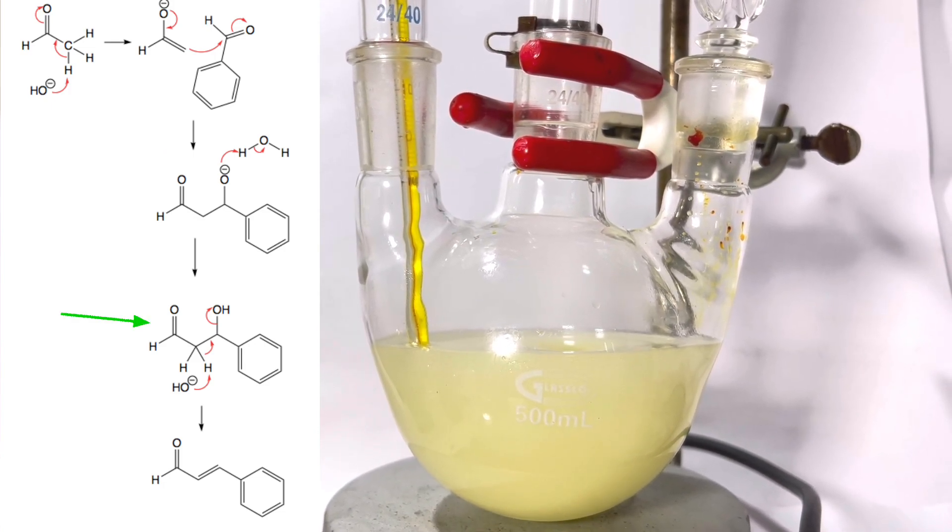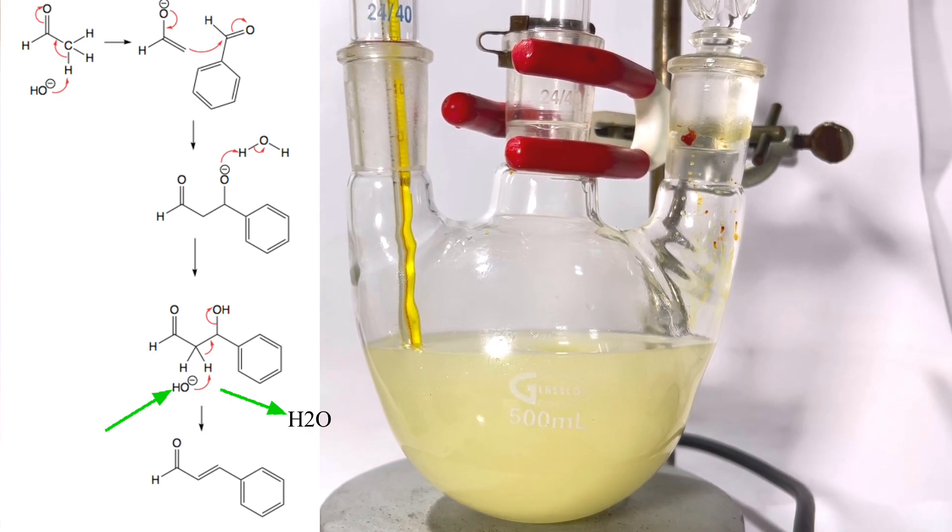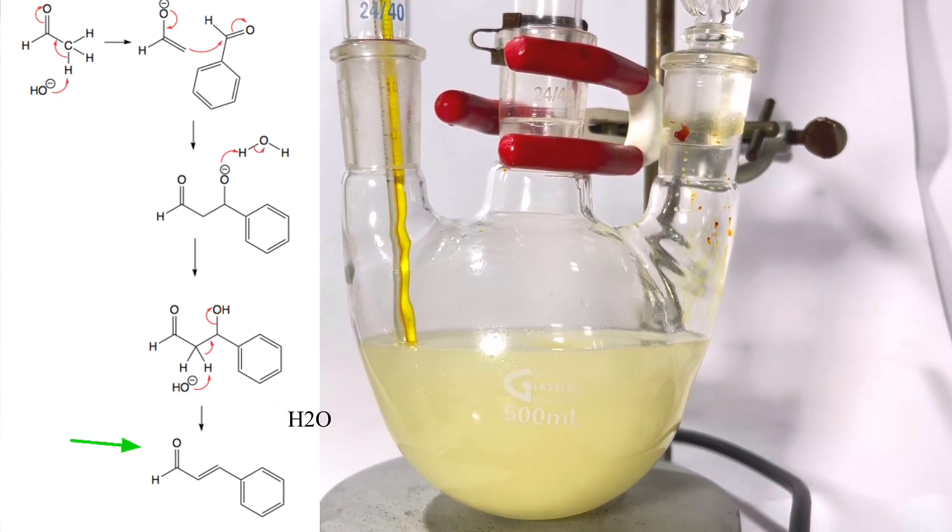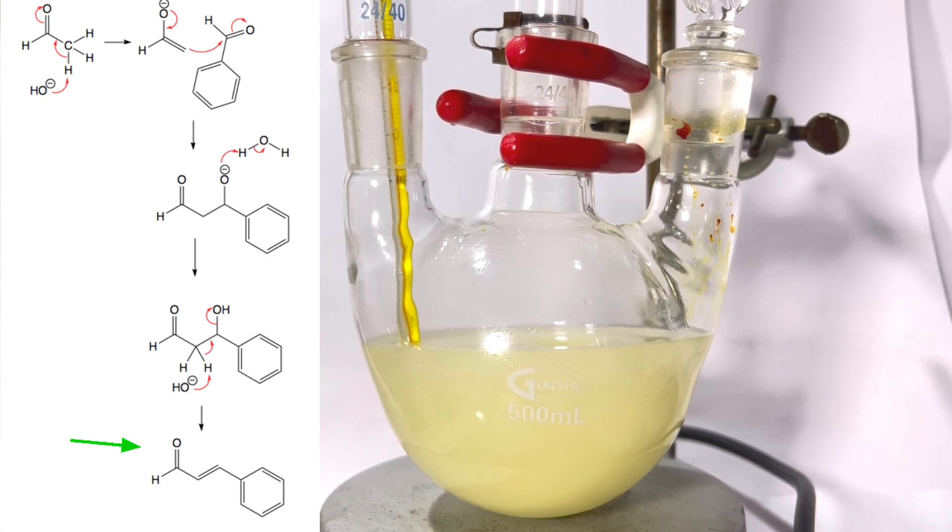The aldol then loses a molecule of water forming the alpha beta unsaturated carbonyl compound, which is the cinnamaldehyde in our case.